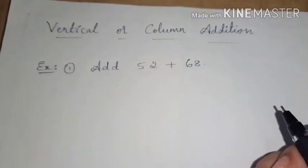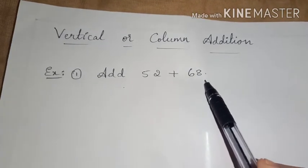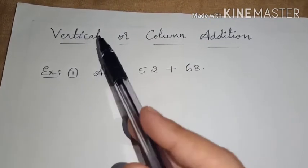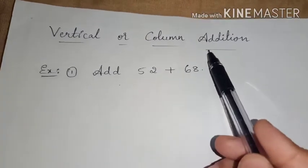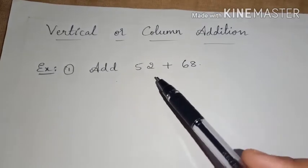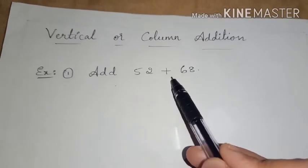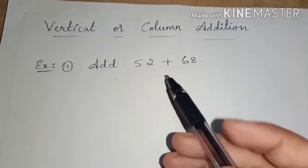Recall that we can add and subtract two or more numbers by writing them one below the other. This is called vertical or column addition. For example, add 52 plus 68. According to the definition of vertical or column addition, we can add and subtract the numbers by writing them one below the other. Here they have given 52 plus 68 in a horizontal line. Now we can solve it vertically.